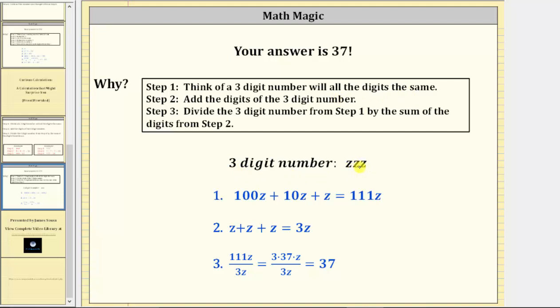And therefore, we could also express the three-digit number as 100 times z, plus 10 times z, plus z, which is equal to 111z.